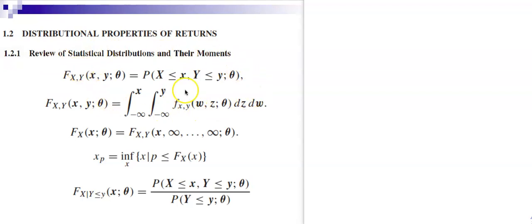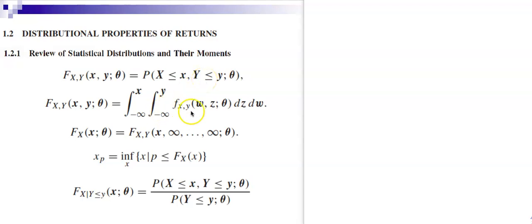This is the joint distribution for random variable X and random variable Y — the joint cumulative distribution function, which can depend on the parameter theta. Theta can be a vector; for example, for a multivariate normal distribution, theta is mu1, the mean of X, mu2, the mean of Y, sigma1, sigma2, and rho_XY, the covariance or correlation between X and Y. To get the joint cumulative distribution function you integrate the joint density function.